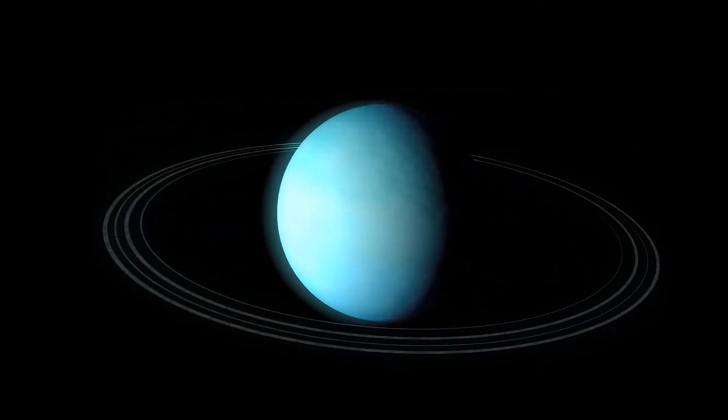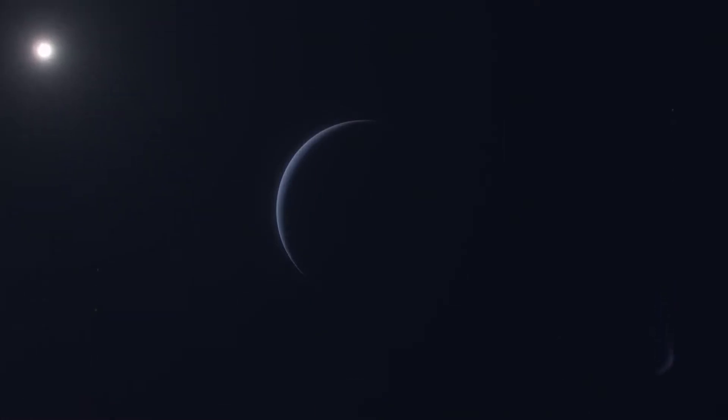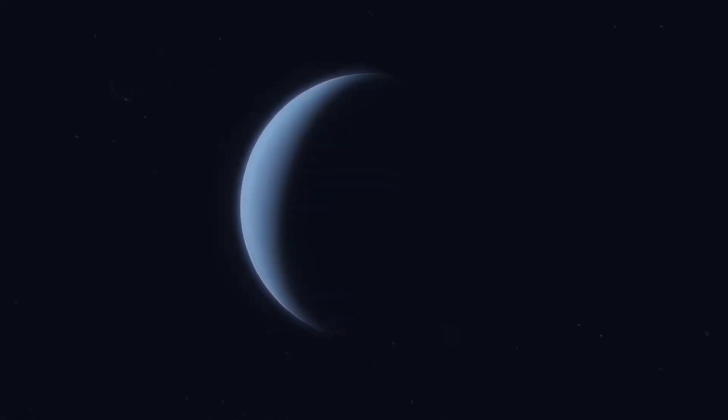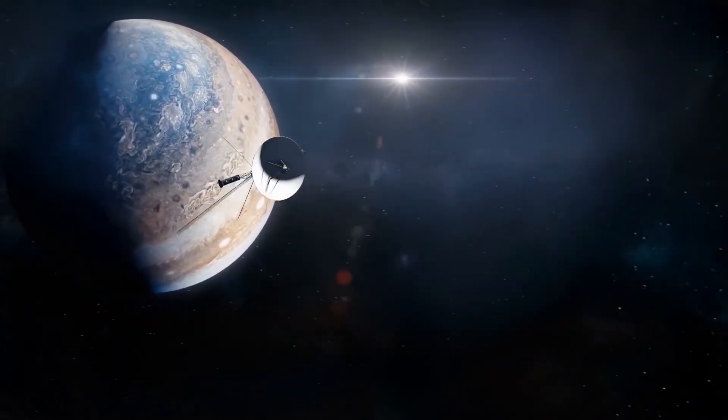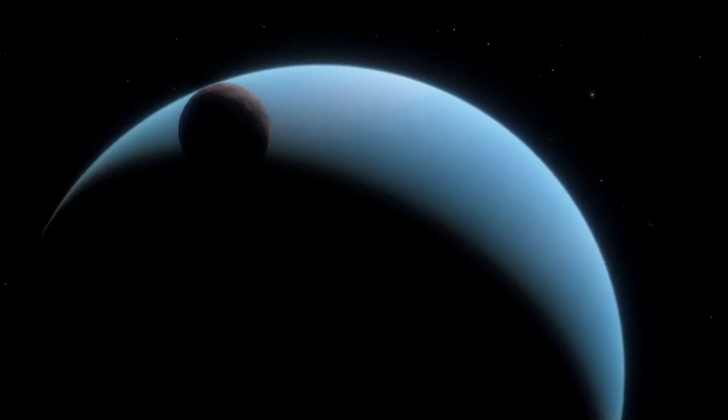Appearance: the great dark spot appears as a large oval-shaped dark region in Neptune's southern hemisphere. It is a high-pressure region in the planet's atmosphere where gas is descending, causing the area to be relatively cloud-free and thus darker in color compared to the surrounding atmosphere.